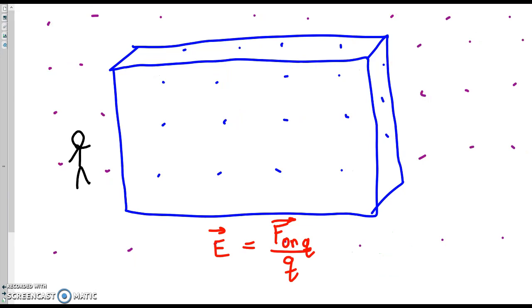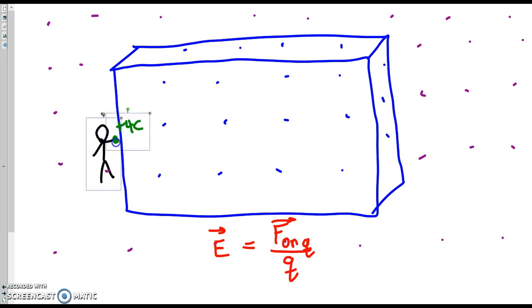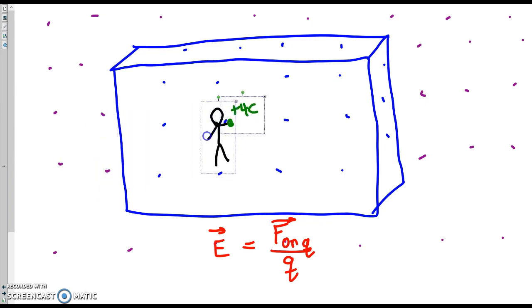You might be wondering why the electric field strength uses the force but divides by the charge q. There's a good reason for this. Let's say you walk in with your test charge, and your test charge happens to be 4 coulombs. You enter the room, and you're ready to use that test charge and measure the electric field. So you place that test charge at your first point, right here, let's say.